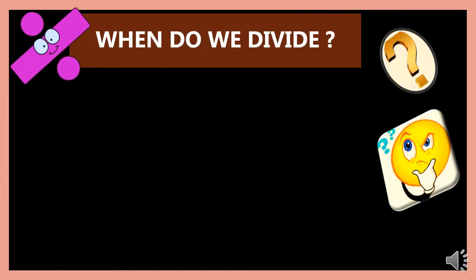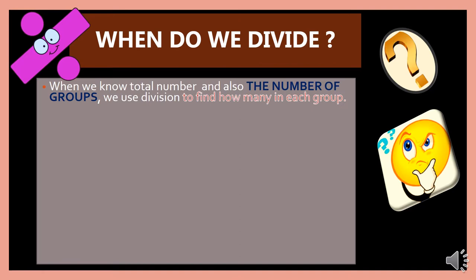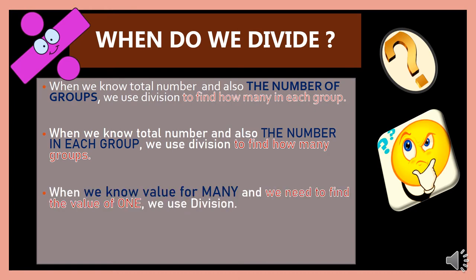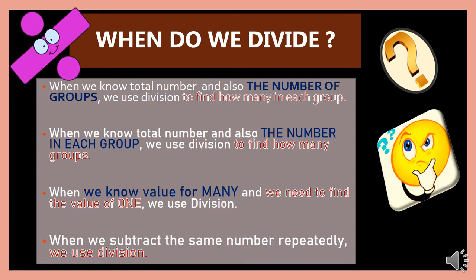Dear children, let us know when we actually divide — under which condition we actually divide. The first condition is when we know the total number and also the number of groups; we use division to find how many in each group. The second condition: when we know the total number and also the number in each group, we use division to find how many groups. The third condition: when we know the value for many and need to find the value of one, we use division. The last condition: when we subtract the same number repeatedly, we use division. Now let us study each one of these conditions with an example.